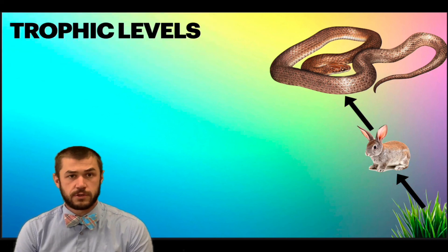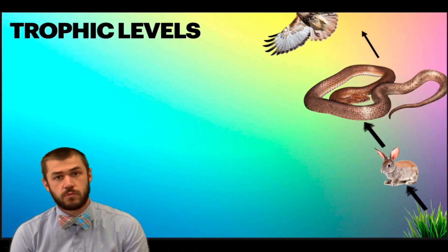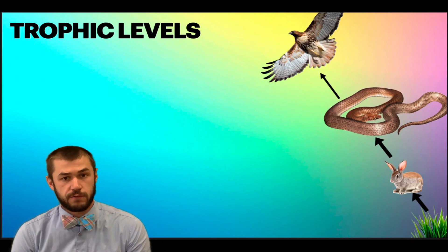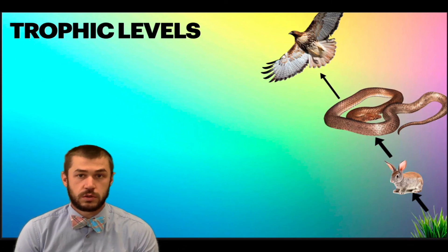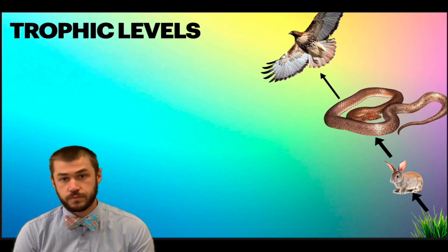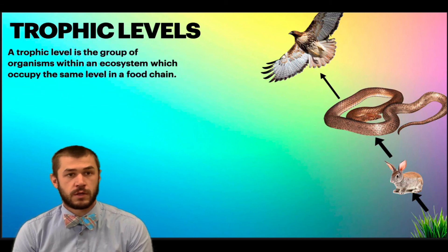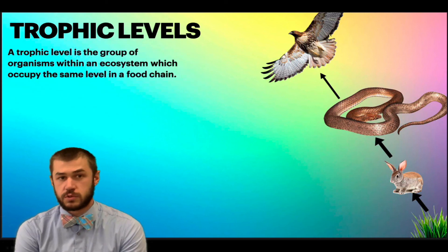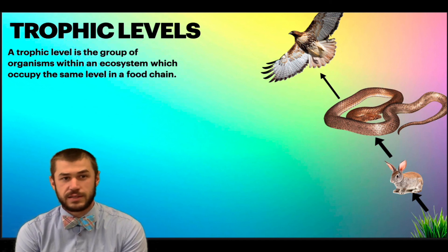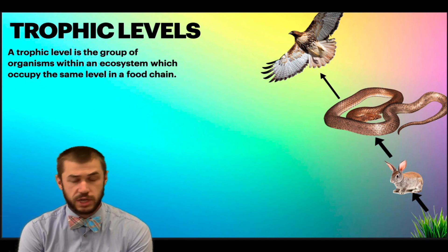So trophic levels, for example, and we'll add in one more trophic level to look at this concept. A trophic level is the group of organisms within an ecosystem that occupy the same level in the food chain.